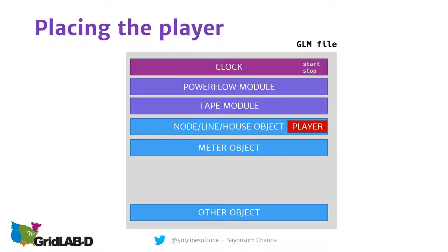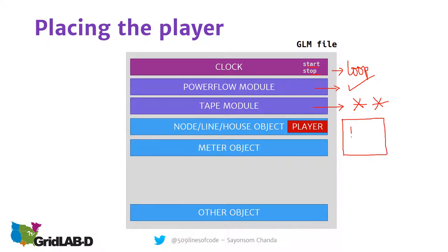The player is part of the GLM file. There can be a start-stop, and you can run the player in a loop. The tape module is absolutely a must if you are using the player in a GridLabD model. The player can be put inside an object like a house or a node — objects can be nested. Both recorders and players can be nested.